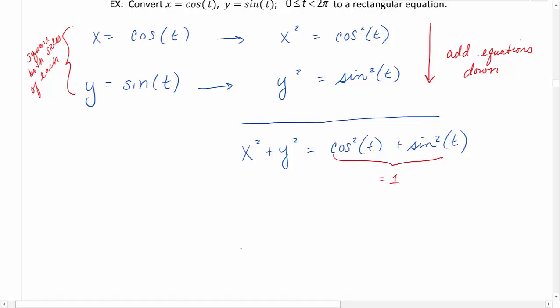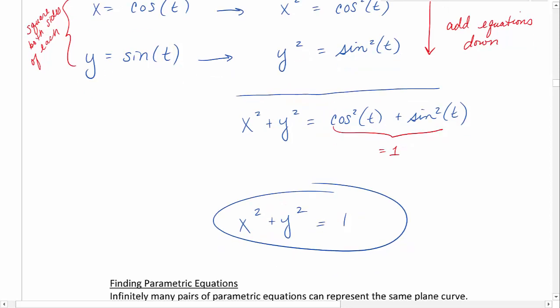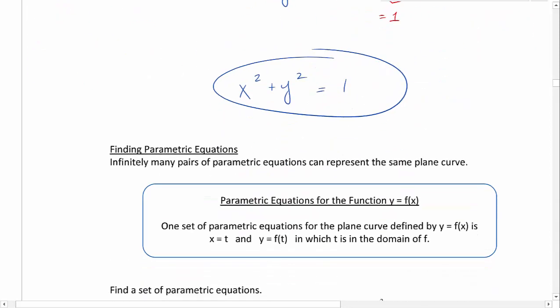So this equation simplifies to x squared plus y squared equals one. We end up with the unit circle.